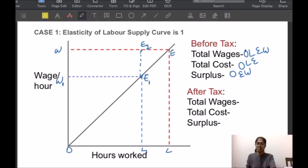After tax, the total wages reduced to OL1E1W1. The total cost shown by the area under the supply curve is OL1E1. Surplus, that is wages minus cost, equals to the area OE1W1. Hence before the imposition of tax, the surplus was the area OEW. And after tax, it reduces to OE1W1.